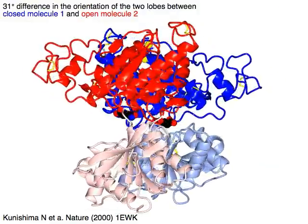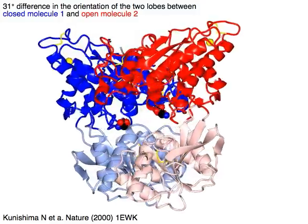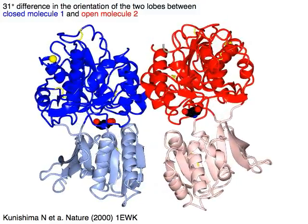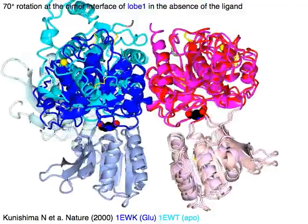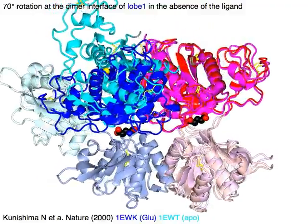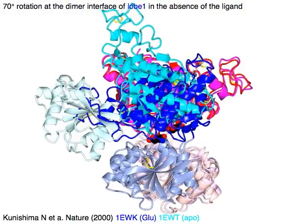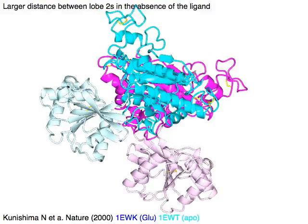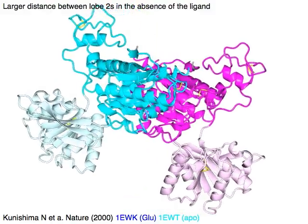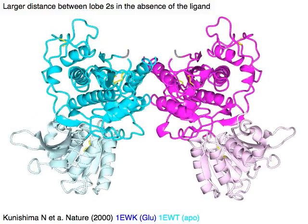There is a 31-degree difference in the orientation of the two lobes between closed molecule one in blue and open molecule two in red. A 70-degree rotation occurs at the dimer interface of lobe one in blue in the absence of the ligand, shown in cyan. As a result, the distance between lobe twos is larger in the absence of the ligand.